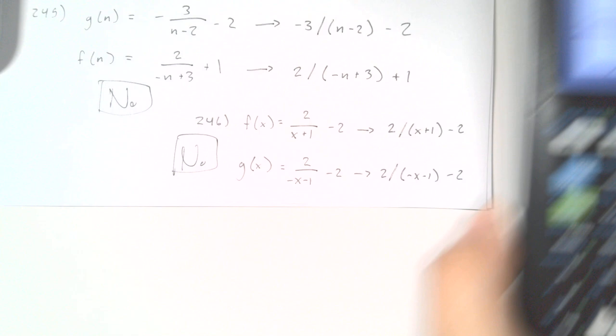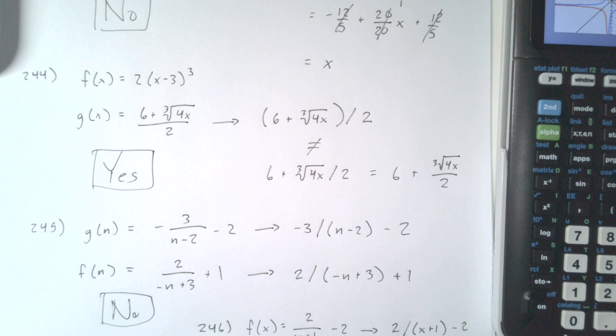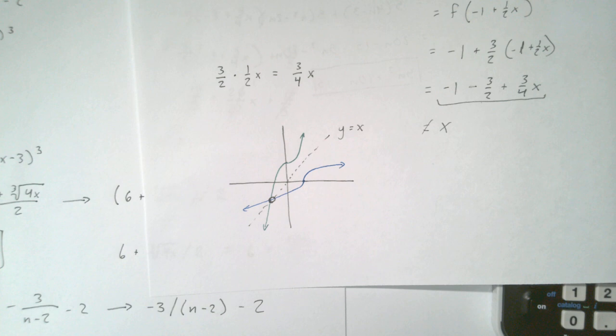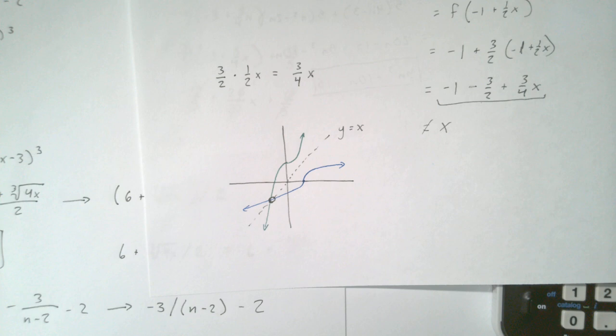To recap: inverse functions reflect over the line y equals x. If you're graphing two functions and they don't reflect over that line, they're not inverses — confidently say no. If they do reflect, they are inverse functions — say yes. That's all I have for you in this video. Thank you for watching.